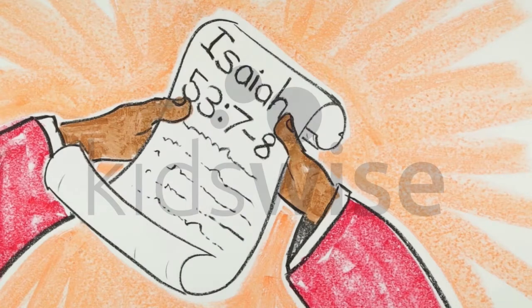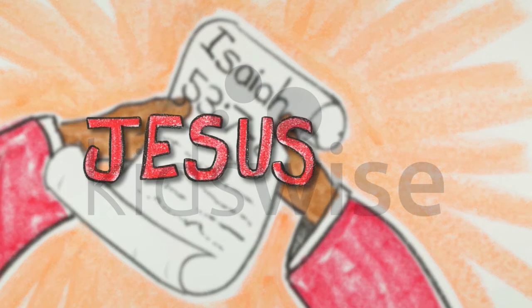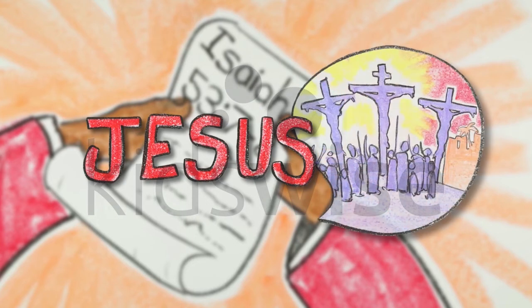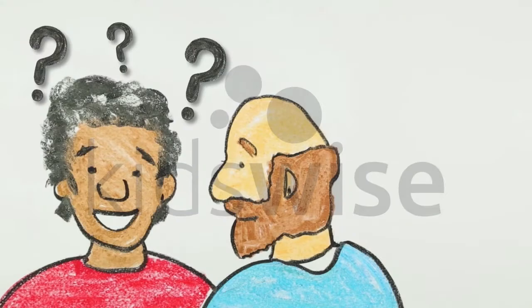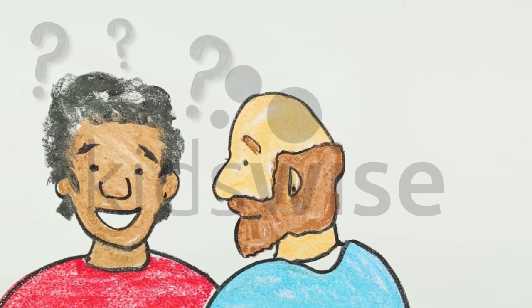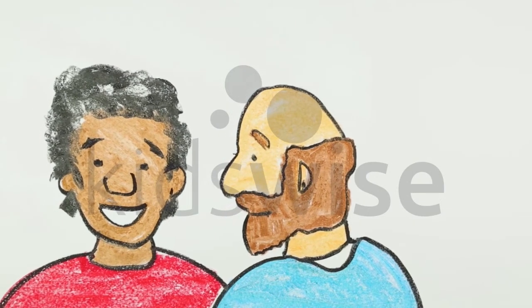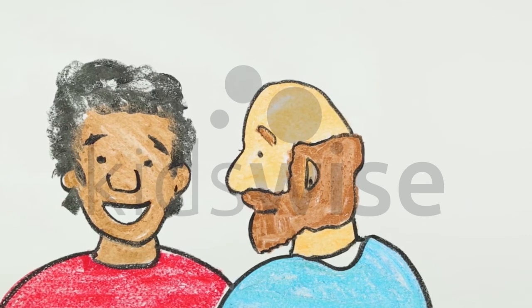God had promised that someone would come. God had promised Jesus. Jesus willingly took the punishment we all deserve. And the Ethiopian believed God's good news. He believed that Jesus had been punished for him.